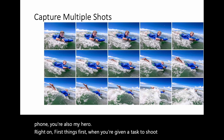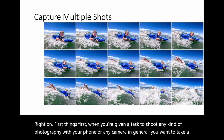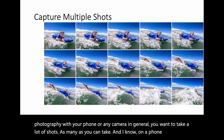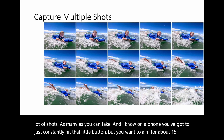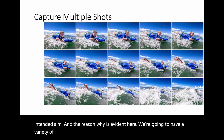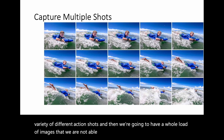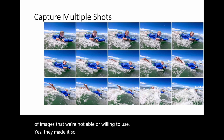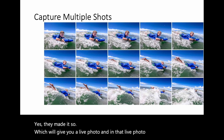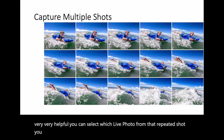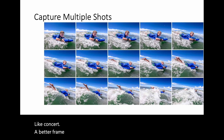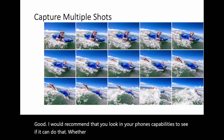First things first: when you're given a task to shoot any kind of photography with your phone or any camera in general, you want to take a lot of shots — as many as you can take. On a phone you've got to keep hitting that little button, but you want to aim for about 15 — pun intended. On iPhone, you can hold down the photo button, which gives you a live photo, and in that setting you can select which frame from that repeated shot you want to use.